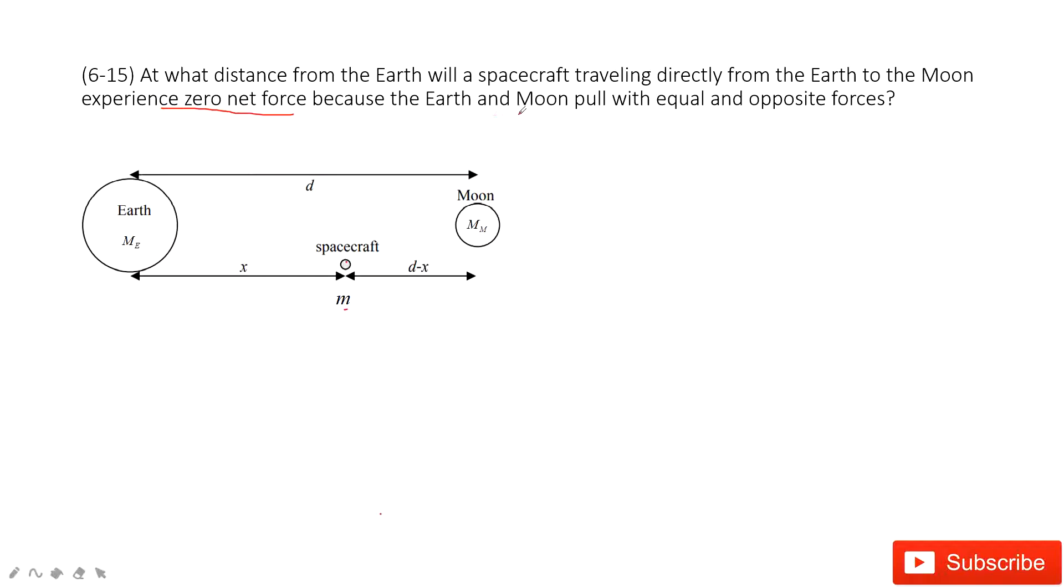Now, what is this equal and opposite force? Gravitational force. So first one, the gravitational force between this M, this spacecraft with the moon, and also the gravitational force between the Earth and the spacecraft. These two forces are equal. This is what the problem tells us.